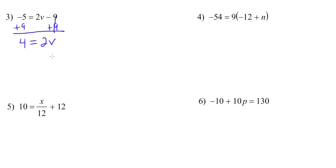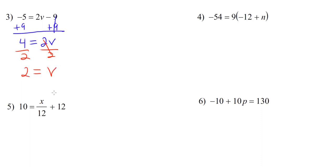Second step, undo multiplication or division. v is being multiplied by 2, so the way we undo that is we're going to divide by 2. On the right, the 2s cancel out, leaving us with v. And on the left, 4 divided by 2 is 2.